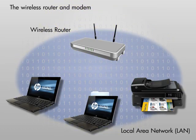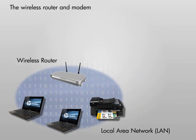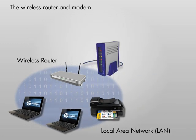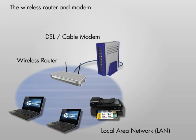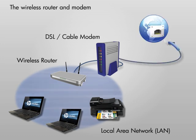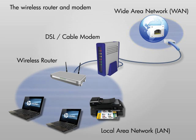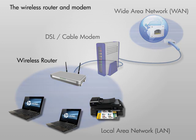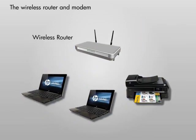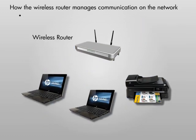The wireless router creates a local area network, or LAN, and manages communication between all the networked devices. The modem connects to your wireless router and provides your local area network with access to the Internet, which is called a Wide Area Network, or WAN. To access the Internet, you need an Internet Service Provider, or ISP, such as your local cable or DSL companies.